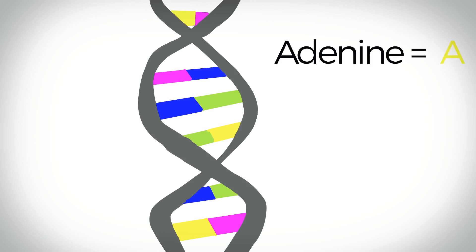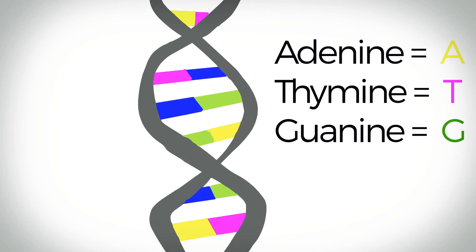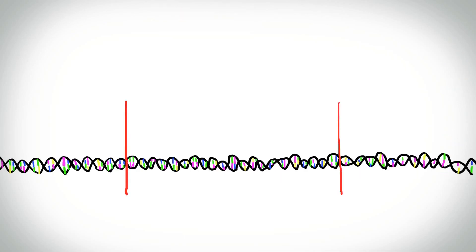Adenine is A, thymine is T, guanine is G, and cytosine is C. A stretch of the DNA is called a gene.